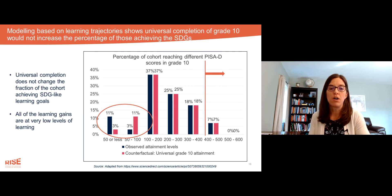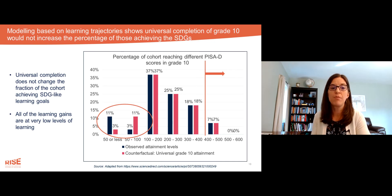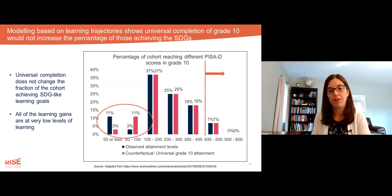The pink bars are the learning levels if all children completed grade 10 — a massive increase in schooling attainment from the current 30% or so up to 100%. But achieving universal completion does not change at all the fraction of the cohort achieving the SDG learning goal. That pink bar and black bar above the 400 line are the same.